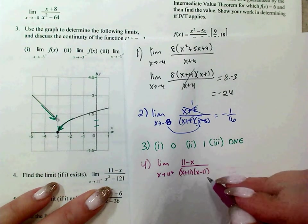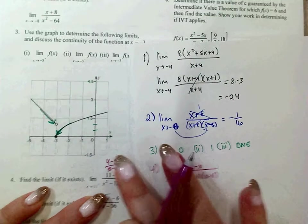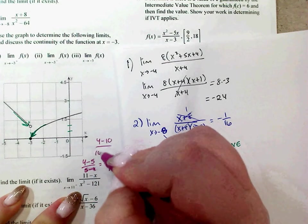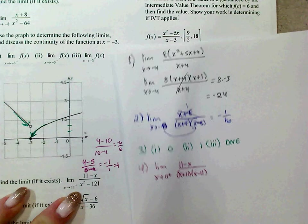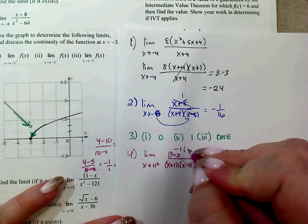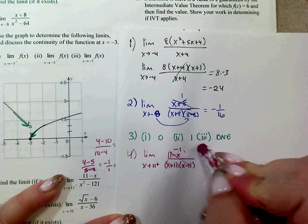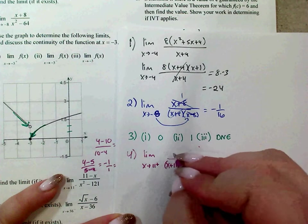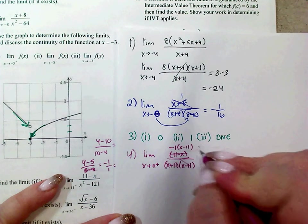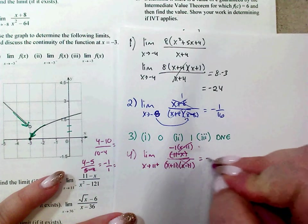The factor 11 minus x over x minus 11 simplifies to negative 1, because factoring out a negative from the top gives negative 1 times x minus 11, which cancels with the denominator's x minus 11. So we're left with negative 1 over x plus 11. Plugging in 11 gives 22 in the denominator, so the answer is negative 1 over 22.